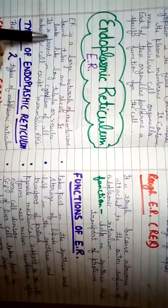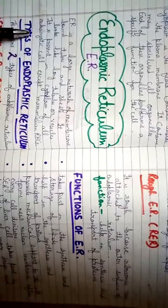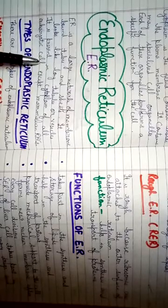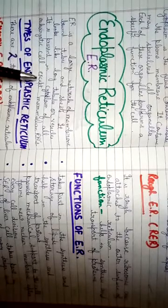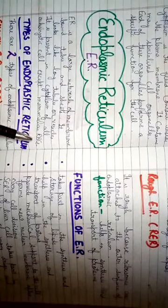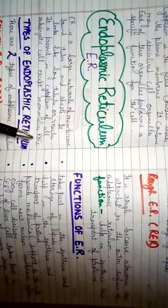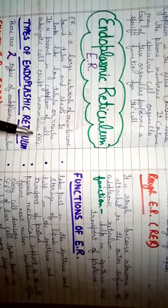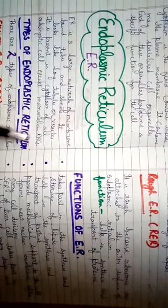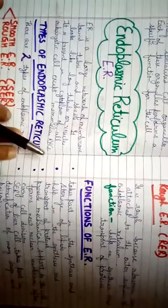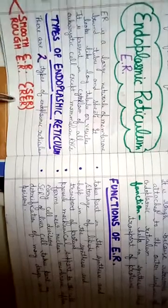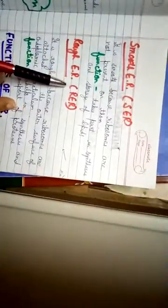Eukaryotic cells are those which have a true, well-developed nucleus. The endoplasmic reticulum is present in all eukaryotic cells except mammalian red blood cells (RBC). It is basically of two types: smooth endoplasmic reticulum and rough endoplasmic reticulum.